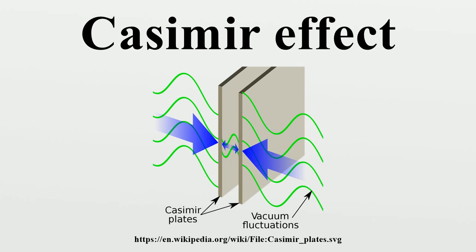The analytic continuation has evidently lost an additive positive infinity, somehow exactly accounting for the zero-point energy outside the slot between the plates, but which changes upon plate movement within a closed system. The Casimir force per unit area for idealized, perfectly conducting plates with vacuum between them is F/A = −(ℏcπ²)/(240a⁴), where ℏ is the reduced Planck constant, c is the speed of light, and a is the distance between the two plates. The force is negative, indicating that the force is attractive — by moving the two plates closer together, the energy is lowered.